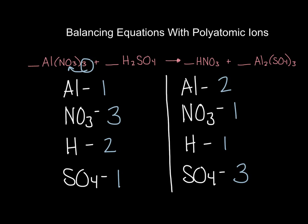I'm going to start by balancing the aluminums. On the reactant side we only have one aluminum; on the product side we have two. So I'll place a two in front of aluminum nitrate. I immediately recount: I now have two aluminums and two times three nitrates, giving me six nitrates on the reactant side. I follow that to the product side — currently only one nitrate — so I place a six in front of nitric acid, HNO₃.